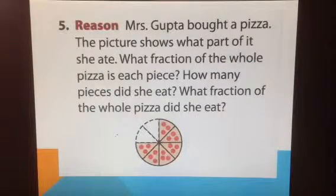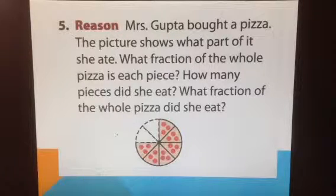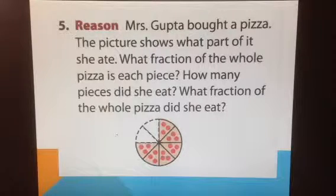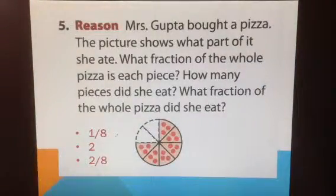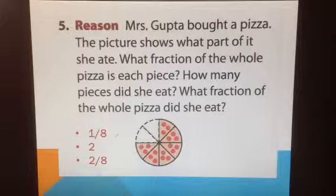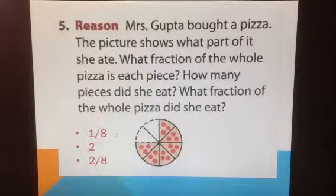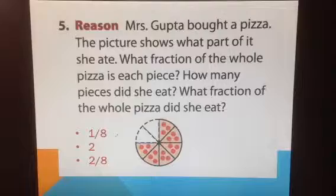Here's another problem we did as a class. Mrs. Gupta bought a pizza. The picture shows what part of it she ate. What fraction of the whole pizza is each piece? How many pieces did she eat? What fraction of the whole pizza did she eat? One-eighth of the pizza is each piece, because there's one piece being described, and there are eight pieces altogether including those already eaten. How many pieces did she eat? Two pieces are missing, so the answer is two. She ate two-eighths.